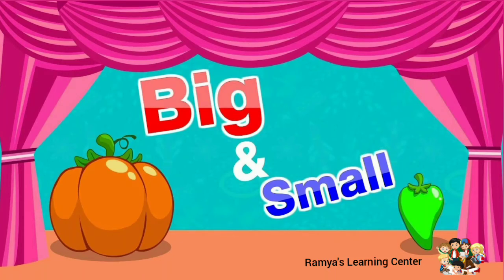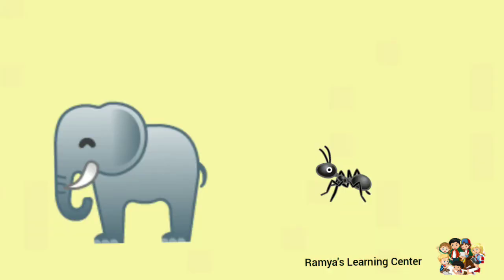Hi kids, welcome to my channel. Today we discuss the concept of big and small. Here we can see two pictures: one is an elephant and one is an ant. The elephant is big and the ant is small.